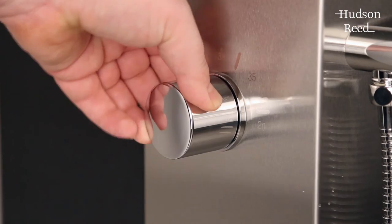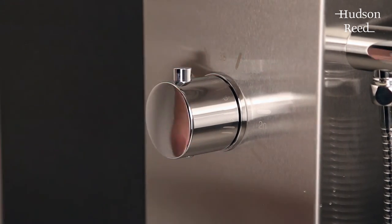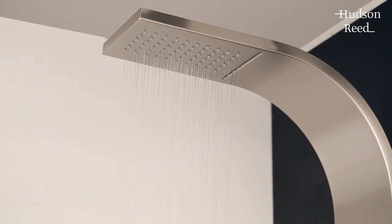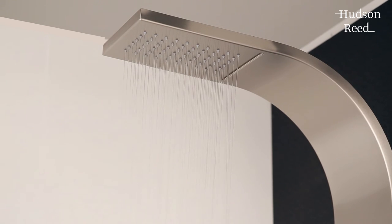Insert the grub screw and replace the plastic cap. Finally, test your shower to confirm the calibration has been successful.